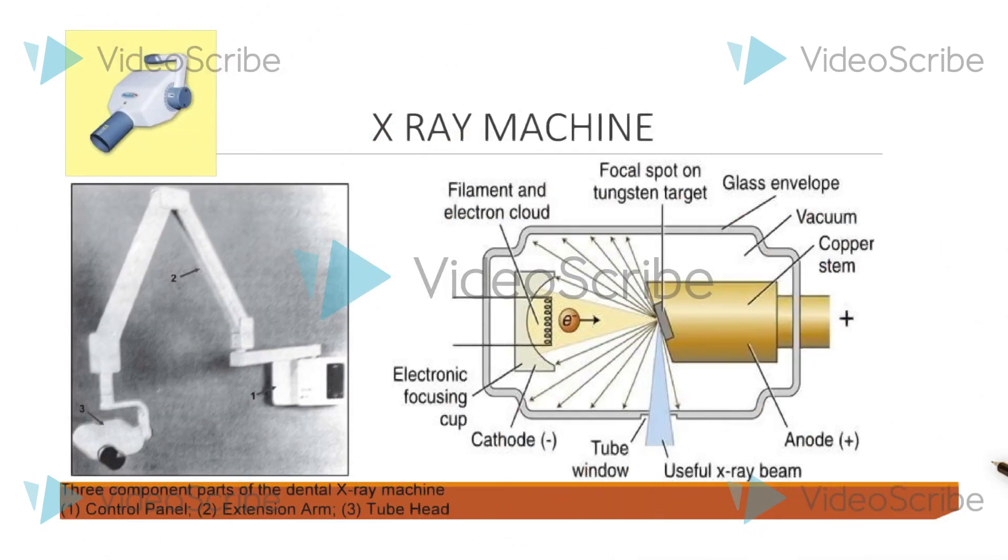Parts of X-ray machine. The three components of dental X-ray machine are control panel, extension arm and the tube head.